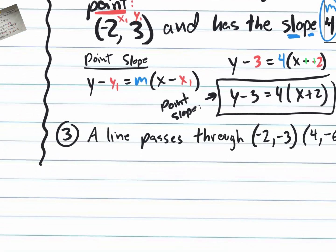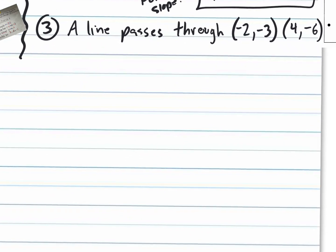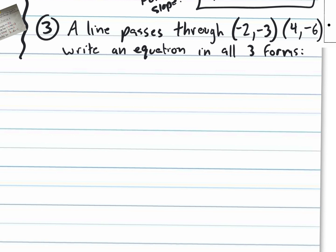Now for the hardest one: a line passes through (negative 2, negative 3) and (4, negative 6). Write an equation in all three forms — slope-intercept, point-slope, and standard. That's the most you'll ever be asked. Given two points, the only thing we know how to do is find the slope.